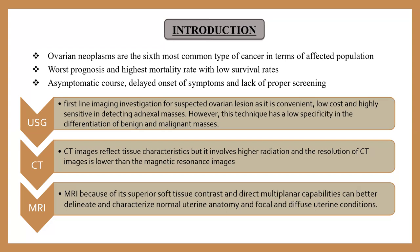However, ultrasound has low specificity in differentiation of benign and malignant masses. CT imaging reflects tissue characteristics but involves higher radiation, and the resolution of CT images is lower than that of MRI images. MRI, because of its superior soft tissue contrast and direct multiplanar capabilities, can better delineate and characterize normal uterine anatomy and focal and diffuse uterine conditions.